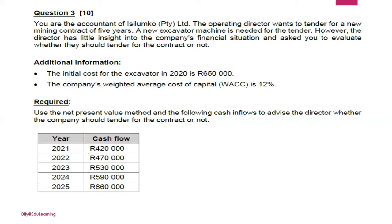The weighted average cost of capital, cost of capital, or rate of return all refer to the same thing — in this question it is 12 percent. You are required to use the net present value method and the provided cash inflows to advise the director whether the company should tender for the contract. We are dealing with non-constant cash flows, which is why you will see different cash flow figures each year.